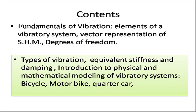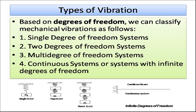The first type of vibration is classified based on degrees of freedom. Mechanical vibration can be classified as: single degree of freedom systems, two degree of freedom systems, three degree of freedom or multi-degree of freedom systems, and continuous systems with infinite degrees of freedom, such as a cantilever beam.